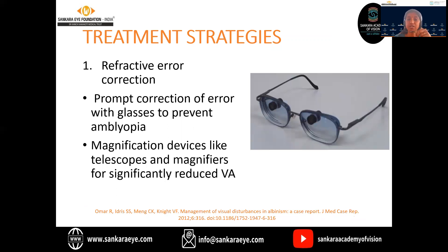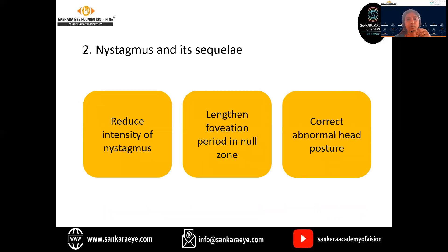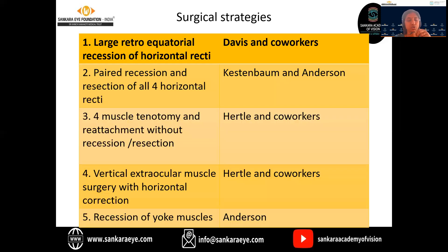Treatment strategies: first comes refractive error correction with glasses to prevent amblyopia. Magnification devices like telescopes and magnifiers can be used to help children with reduced visual acuity. Occlusion therapy is used if there are features of amblyopia, and in the presence of manifest latent nystagmus with moderate amblyopia, atropine penalization can be tried. For nystagmus management, we should try to reduce the intensity of nystagmus, lengthen the foveation period in the null zone, and correct the abnormal head posture. Various surgical strategies are available depending on the type of nystagmus.